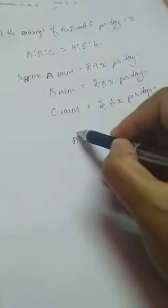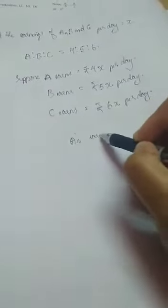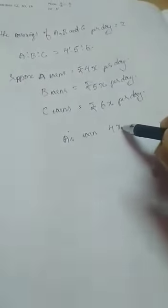Now in this case, what we will do is we will equate. Because only A earns 64 per day is given. So we have assumed that A earns 4X per day. That is, A earns 4X per day is equal to the total amount given, rupees 64. I need to find the value of X, then only I can find B and C value.